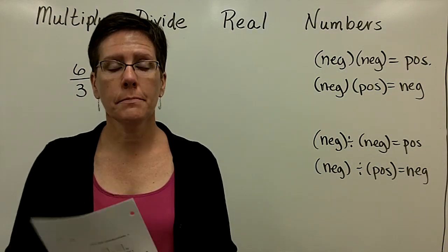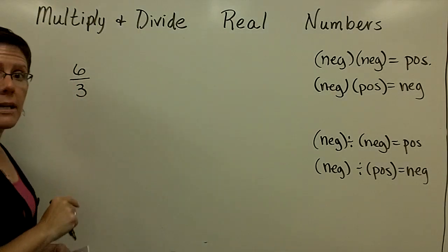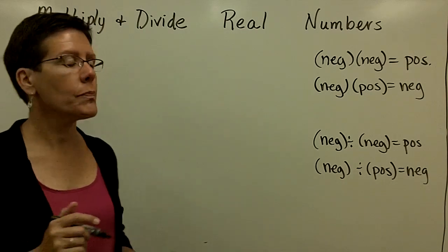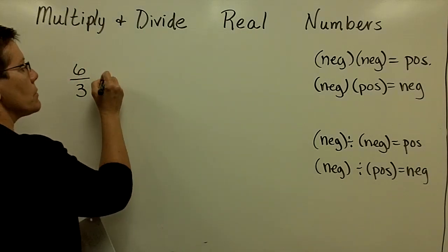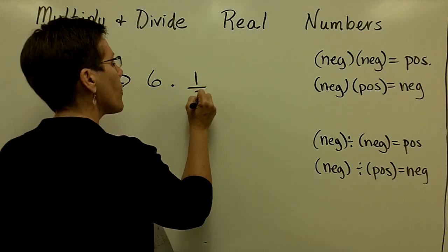Every division problem can be turned into a multiplication problem. The division problem 6 divided by 3 has an answer of 2. But 6 divided by 3 can also be rewritten as 6 times 1 third.